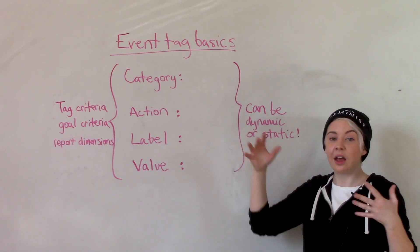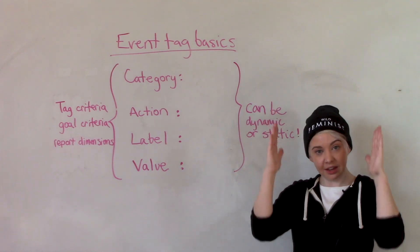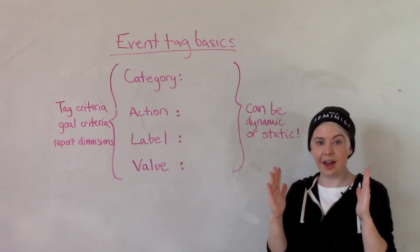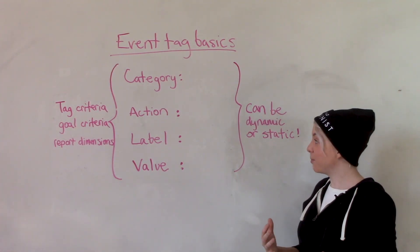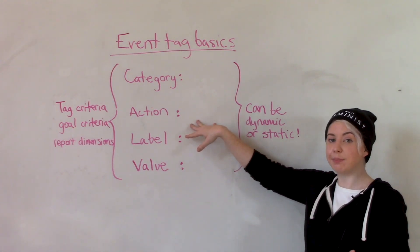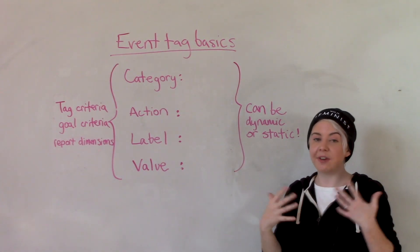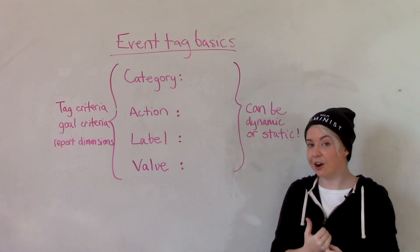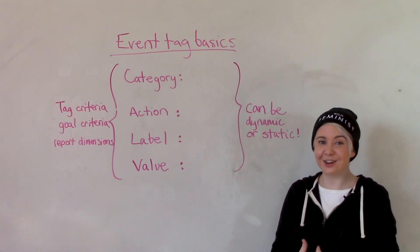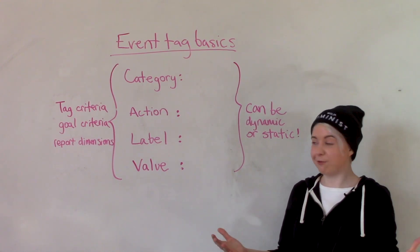Next, you just have to decide how you want to differentiate within that category the different actions that you have. In this case, the action can be something really simple. Let's use the example of adding stuff to your cart. Added to cart from special page, added to cart from detail page. Really straightforward there.